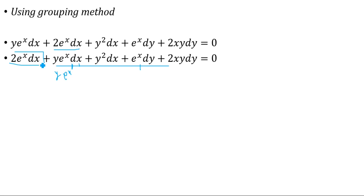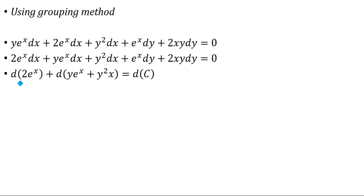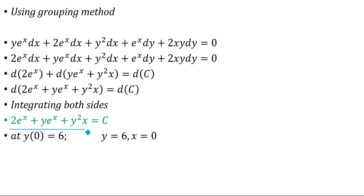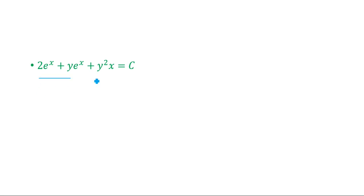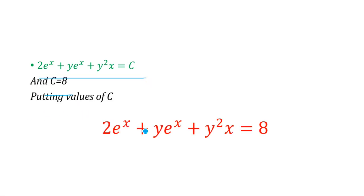Taking d common and integrating both sides, we get the general solution: 2e^x + ye^x + xy² = C. Applying the initial condition y(0) = 6, meaning x = 0 and y = 6: 2e⁰ + 6·e⁰ + 0·36 = C, giving 2 + 6 = C, so C = 8. Substituting C back, the final solution is: 2e^x + ye^x + xy² = 8.